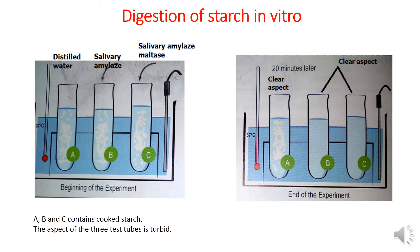This is the aim of the following experiment: digestion of starch in vitro. In vitro means outside the body. At the beginning of the experiment, at t equal zero, three test tubes are inserted in a water bath at 37 degrees Celsius. Tube A contains distilled water and starch paste.